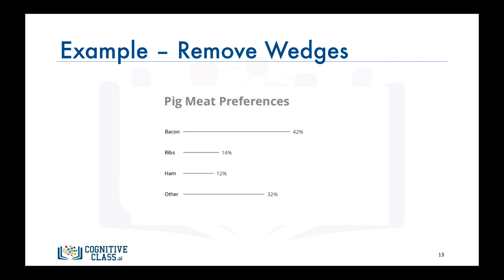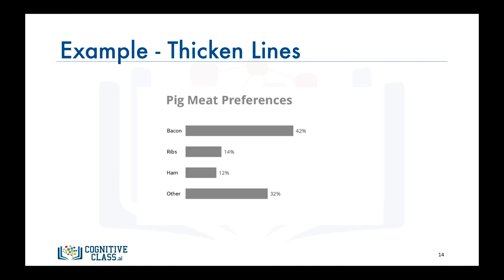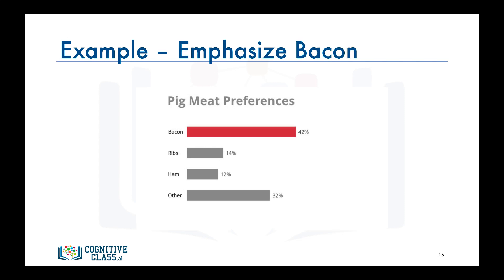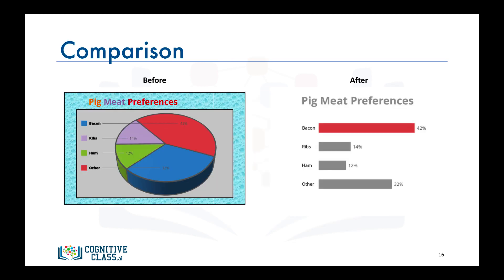Whoa! What just happened? Well, let's thicken the lines to make them more meaningful. Now, this looks a little familiar. Yes, this is a bar graph after all — one with horizontal bars. And finally, let's emphasize bacon so that it stands out among the other types of pig meat.